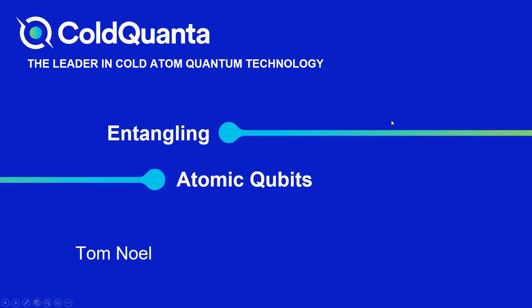Our speaker today is Tom Knoll, the director of quantum computing at ColdQuanta. Tom currently leads ColdQuanta's effort to build a cold atom quantum computing system and is principal investigator on a ColdQuanta-led collaboration of industrial, academic, and national lab partners under the DARPA-ONISC program to demonstrate quantum advantage on real-world applications. He comes to ColdQuanta following a PhD in trapped ion quantum information from the University of Washington and a stint at Ball Aerospace, helping the Air Force make holes in things with lasers.